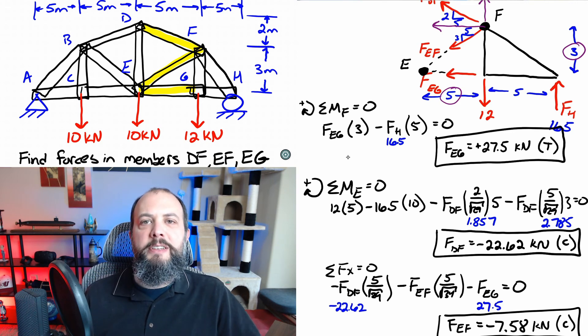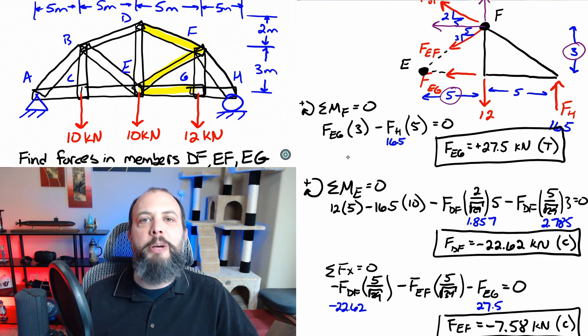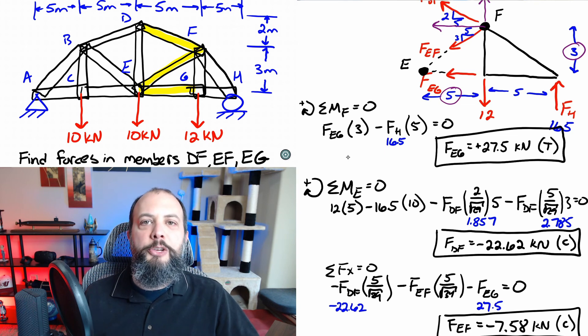The most difficult part of the method of sections is probably the spatial reasoning of recognizing that you can do a sum of moments about point E in order to isolate one of the forces to find it faster. Without that shortcut you would have had to solve this using simultaneous equations which would then add more opportunities to make algebra or calculator mistakes.